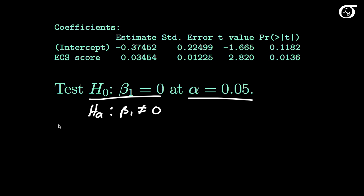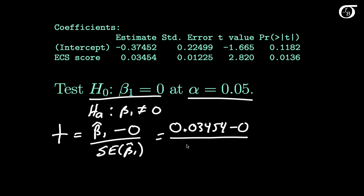The test statistic is a t-test. The t-statistic is equal to our estimator of beta 1, which is beta 1 hat, minus the hypothesized value, which is 0, over the standard error of our estimator. In this case that works out to 0.03454 minus the hypothesized value of 0, over the standard error, which is 0.01225. And that equals, to two decimal places, 2.82. Wait a minute, that is also given right here in the output. So we didn't actually have to calculate that because that's given in the output.